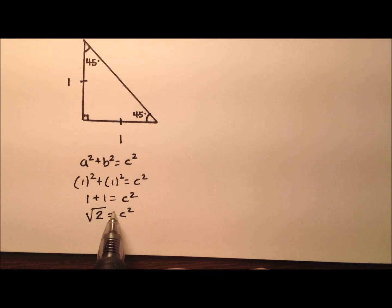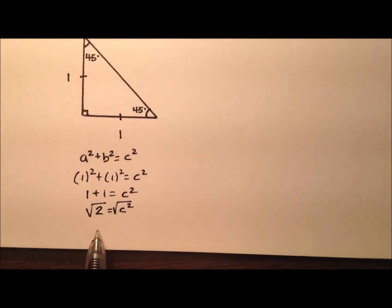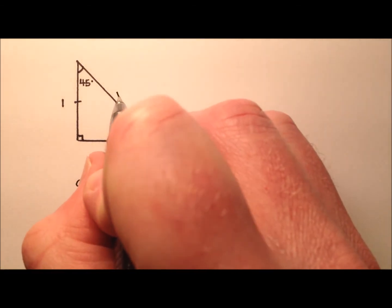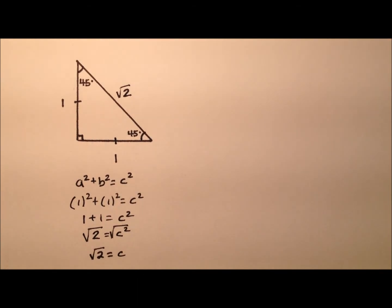When I take the square root of both sides, I'll see that the square root of two is the length of that hypotenuse. So let's write that in there, √2 right there.